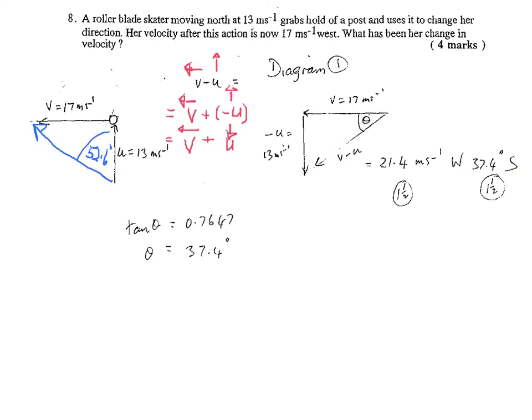Now if you get a direction which is North 52.6 degrees West as your direction, what you have actually done is you haven't done V take U, you've done V plus U. So you haven't done V plus the opposite of U.